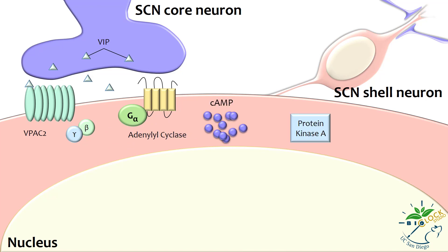Cyclic AMP then activates an enzyme called protein kinase A, or PKA, which travels to the nucleus where it phosphorylates CREB. Although the kinase that carries out the phosphorylation is different than in the SCN core cells, the effect on CREB is the same.